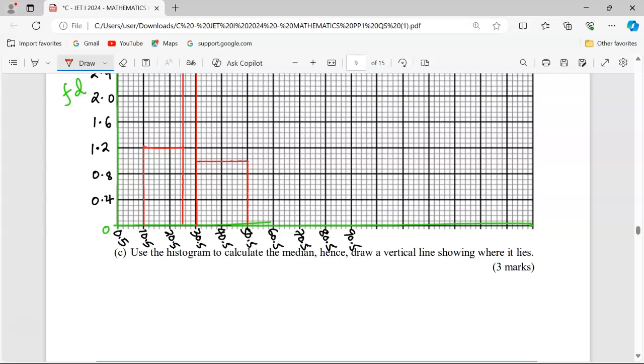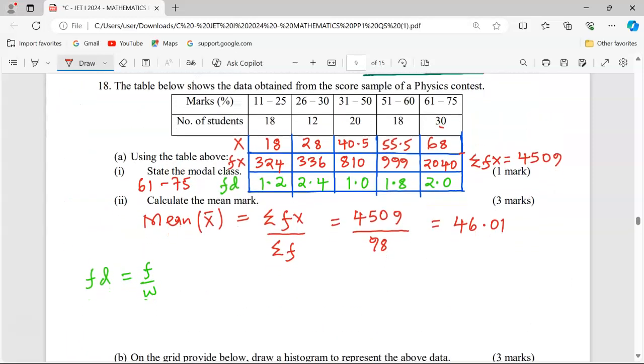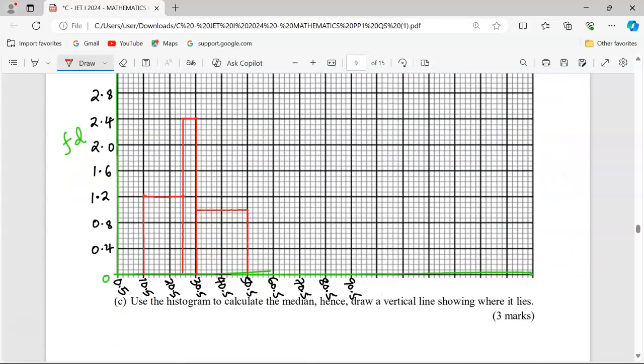The fourth bar will start from 50.5 all the way to 60.5, and the height is going to be 1.8. 1.8 is exactly between 1.6 and 2.0, so up to here. This is the bar which represents the fourth class.